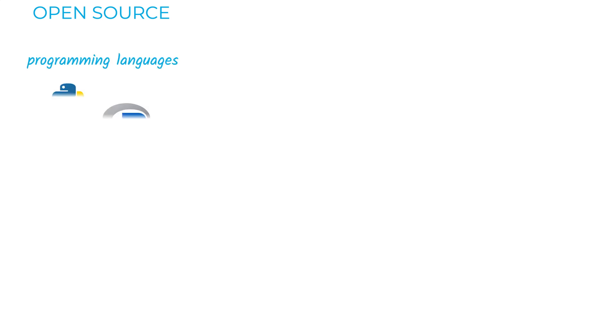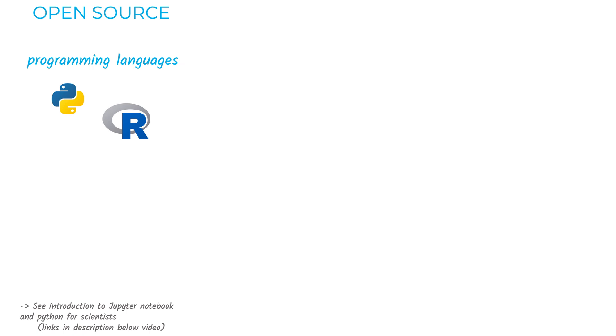The first recommendation is to use open-source tools, which means open-source programming languages such as Python or R, and open file formats — for example, TXT or Markdown when we share text, or CSV when we share tables.